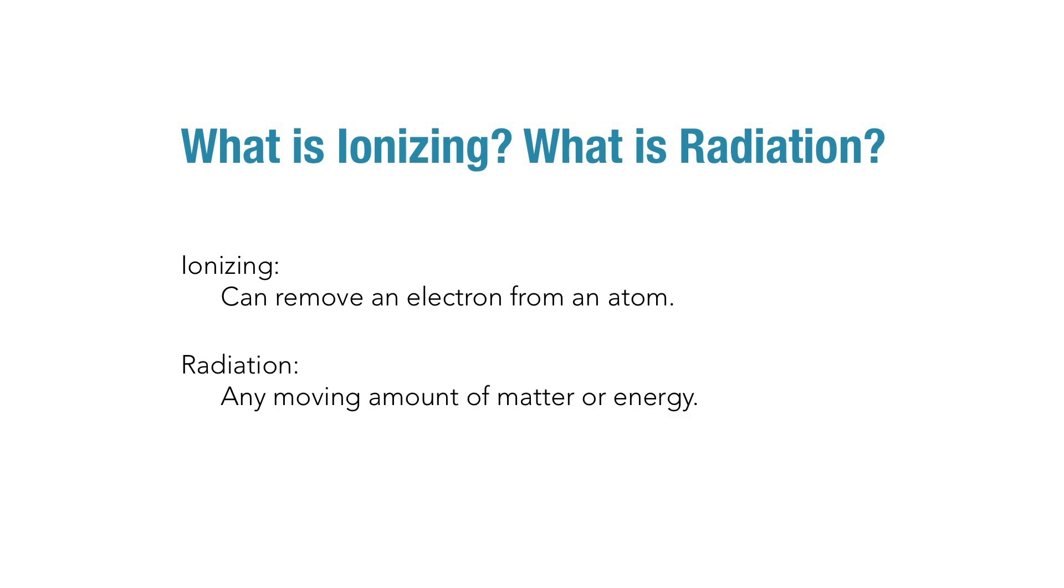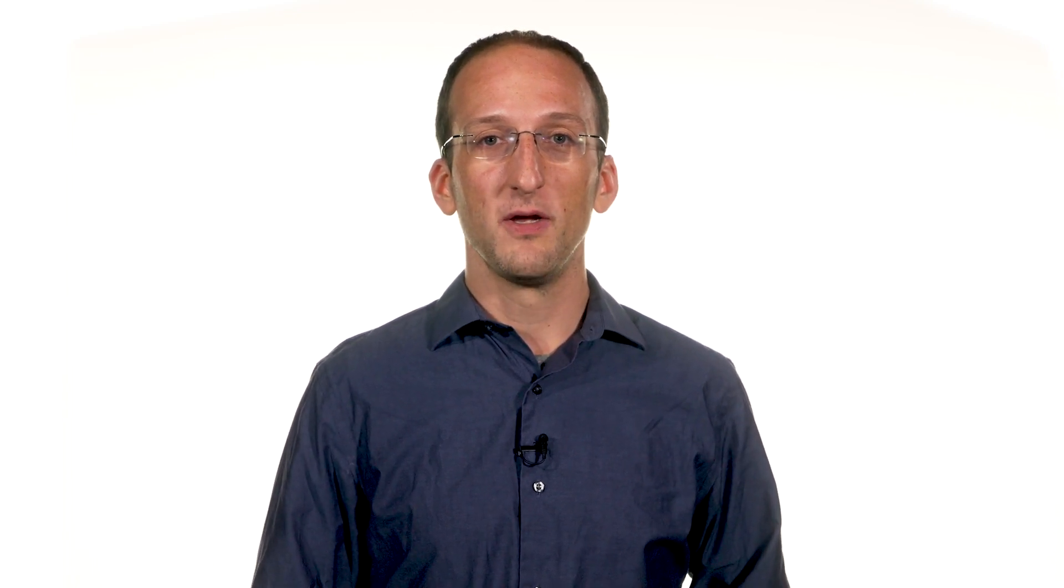Radiation is any moving amount of matter or energy. To a physicist, matter and energy are the same thing because they're related with Einstein's famous equation E equals MC squared. You can see here that radiation that can ionize is physically able to remove an electron surrounding the nucleus of an atom. In this case it could be a proton, an electron, anything with enough energy to pull that electron out could be considered ionizing.